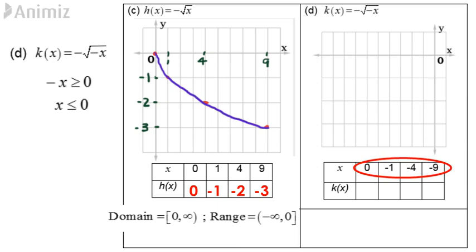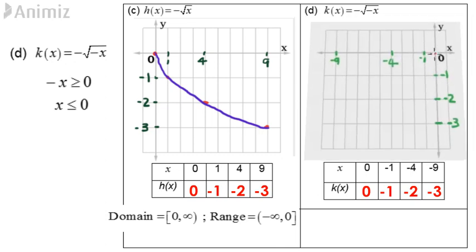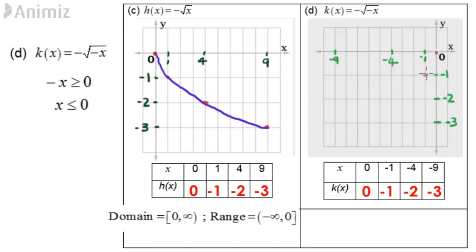The corresponding output for each x is 0, negative 1, negative 2, and negative 3. Plot these points and sketch the curve. Plot 0, 0, negative 1, negative 1, negative 4, negative 2, and negative 9, negative 3. Then, draw a smooth curve passing through all these points.